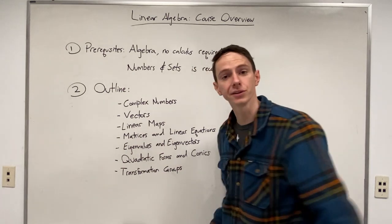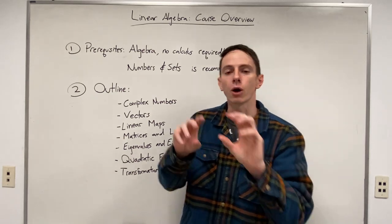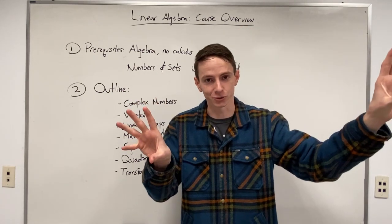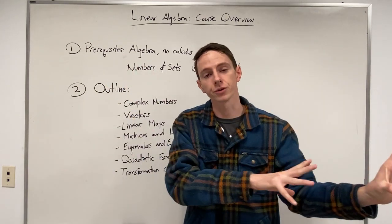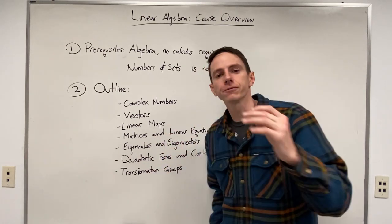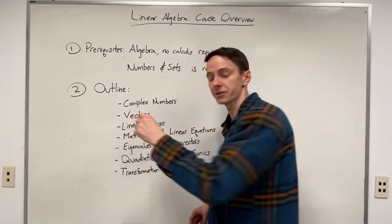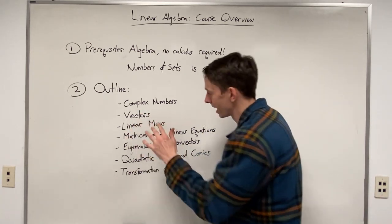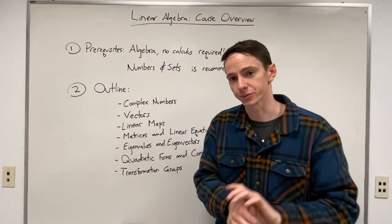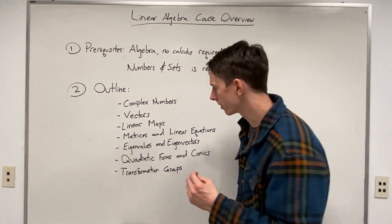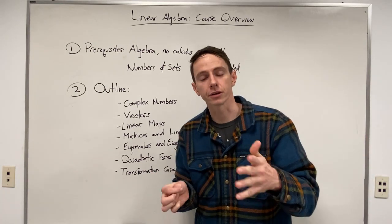Then moving on to linear maps. Once we have an understanding of what a vector space is, it's good to know how we can move between vector spaces. And a linear map can be thought of as a function that goes from one vector space into another. But a linear map by itself is not just that. It has an additional property that makes this map a linear map. And we are interested in linear maps because we are studying linear algebra. So learning about how to go between vector spaces is going to be very important.